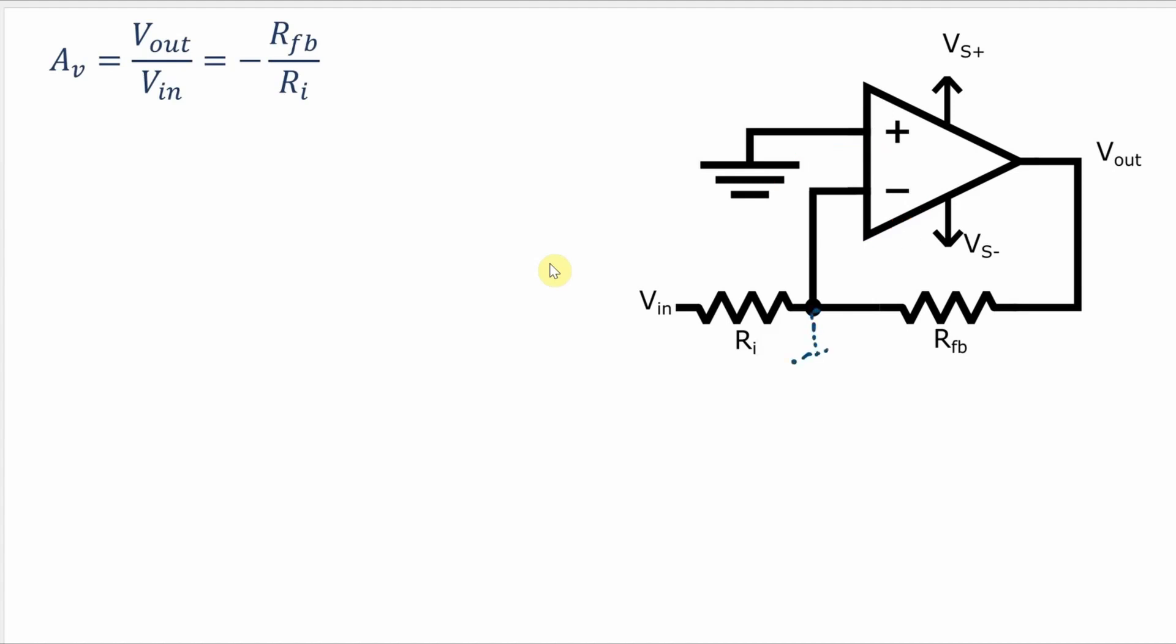Since it is not actually physically tied to ground we call this a virtual ground. So now we can use the fact that this is at a virtual ground and the fact that the current through RI has to be the same as the current through RFB to derive this equation.